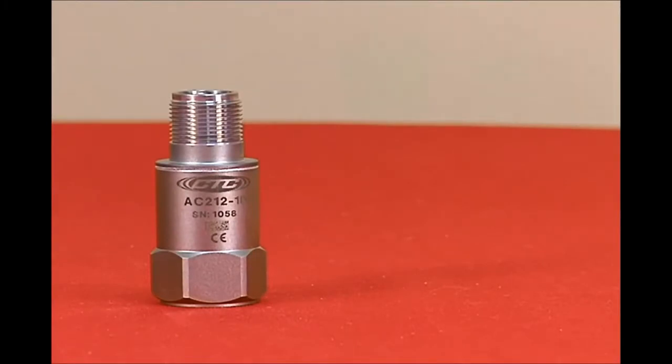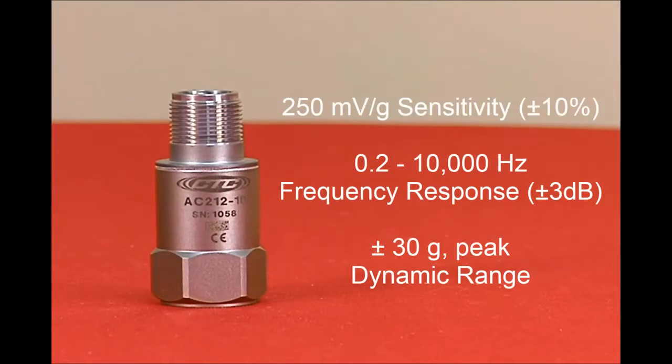The AC212-1D sensor is a plus or minus 10 percent sensor with a sensitivity of 250 millivolts per G. The frequency response goes from 0.2 hertz to 10 kilohertz, 12 cycles per minute to 600,000 cycles per minute. The dynamic range is plus or minus 30 G's peak.